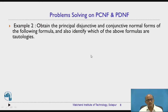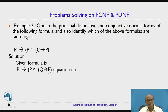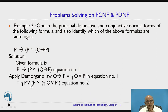Now let us focus on example number two: obtain PCNF and PDNF and also identify whether it is a tautology or not. The question is: P → (P ∧ Q) → P — let us call this equation number one. We remove the conditional connective using P → Q = ¬P ∨ Q. Substituting, equation one becomes: ¬P ∨ [P ∧ (¬Q ∨ P)] — this is equation number two.